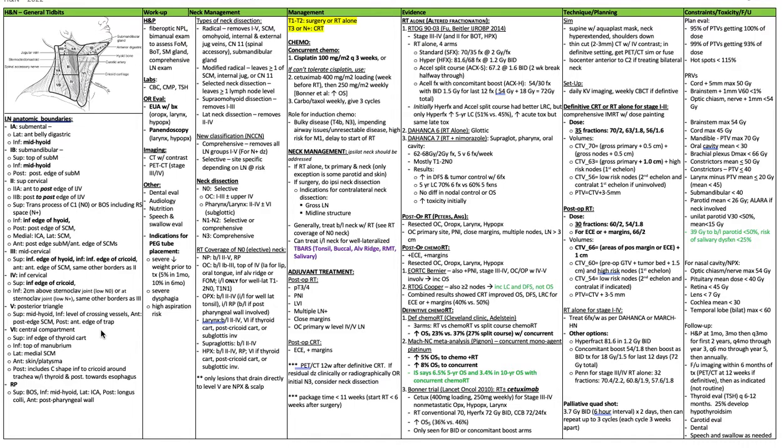Imaging: CT with contrast of the neck and chest, and PET-CT for any stage 3 or 4. Other: dental evaluation, audiology, nutrition, speech, and swallow. Indications for PEG tube placement are severe weight loss prior to treatment — 5% in one month or 10% in 6 months — severe dysphagia, or high aspiration risk.